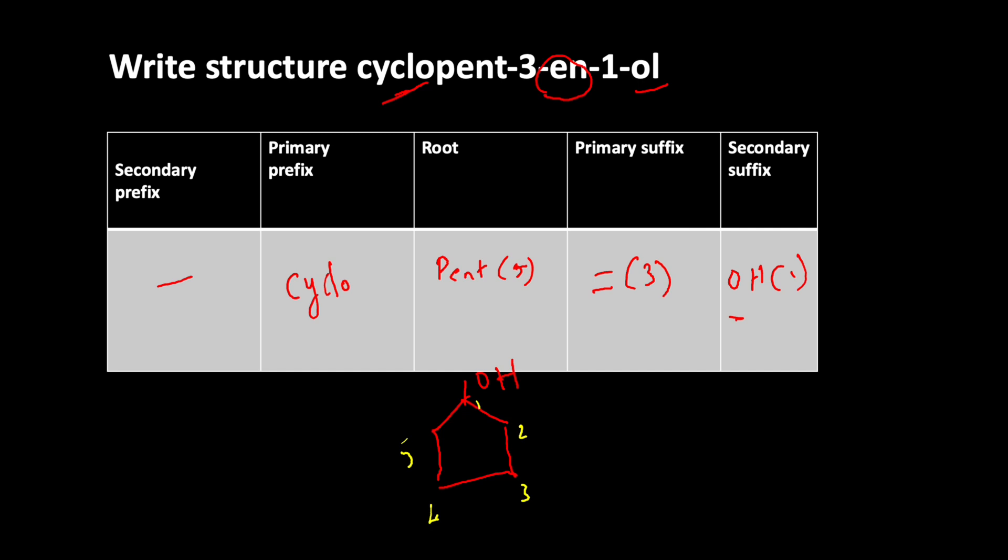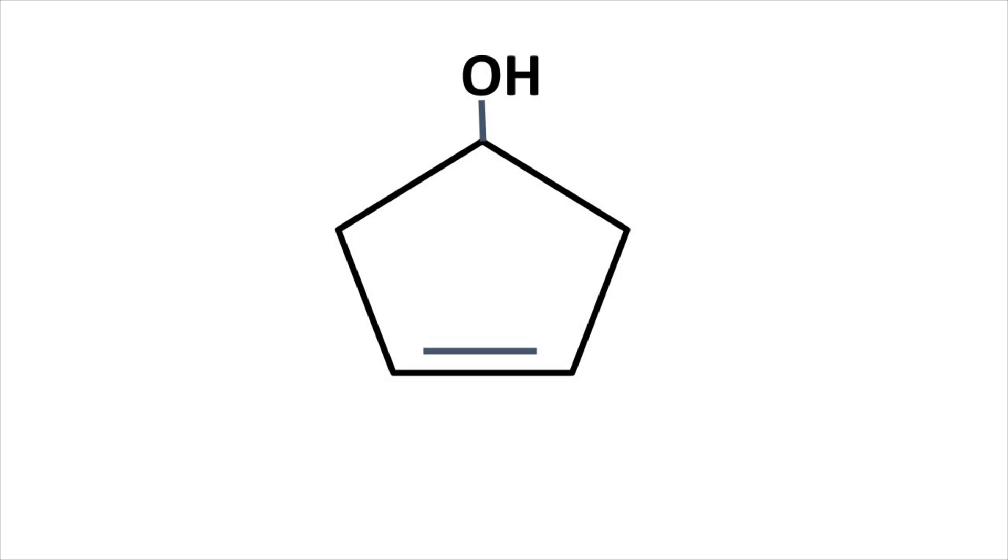We have the primary suffix 'en' in the third position, so there is a double bond in the third position. This is the structure of cyclopent-3-en-1-ol. Thanks for watching.